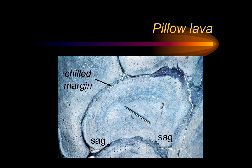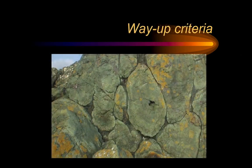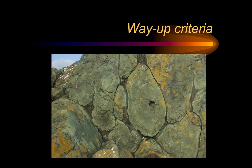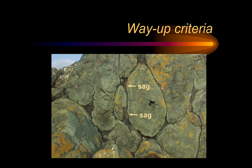We can apply this to looking at some pillow lavas found here in Wales. This is a pillow lava found on a place called Llanddwyn Island in Anglesey. This shows us that this part of the crust was once underwater when a volcano was erupting — these are pre-Cambrian age, about 600 million years ago. We can identify the sags on this pillow, which shows that this particular pillow lava has been tilted. The right way up is going off to the right, meaning these pillows have been tilted through about 90 degrees.